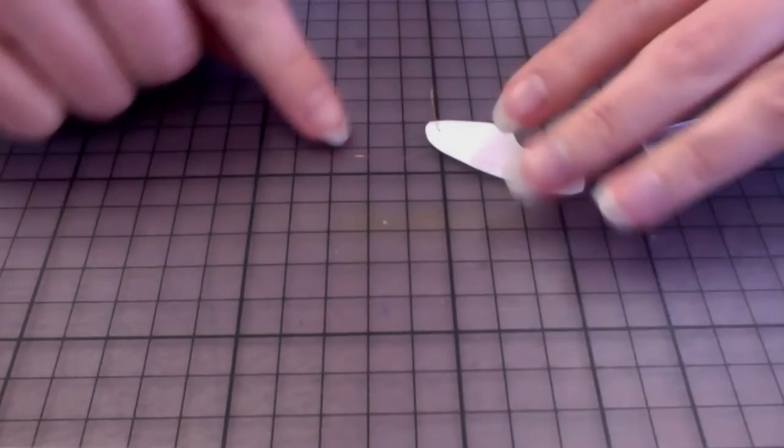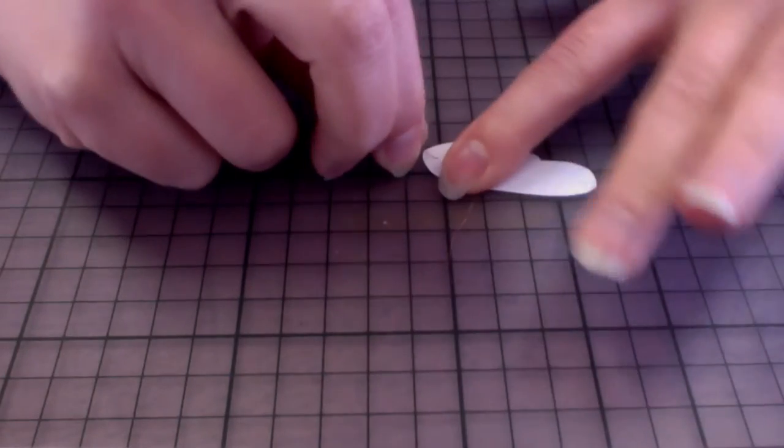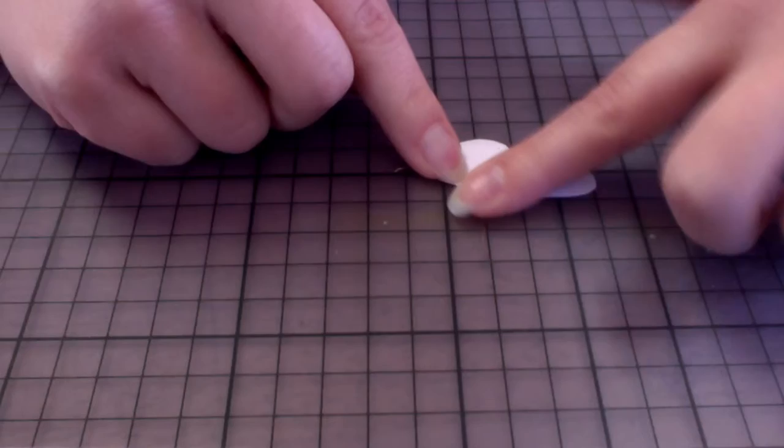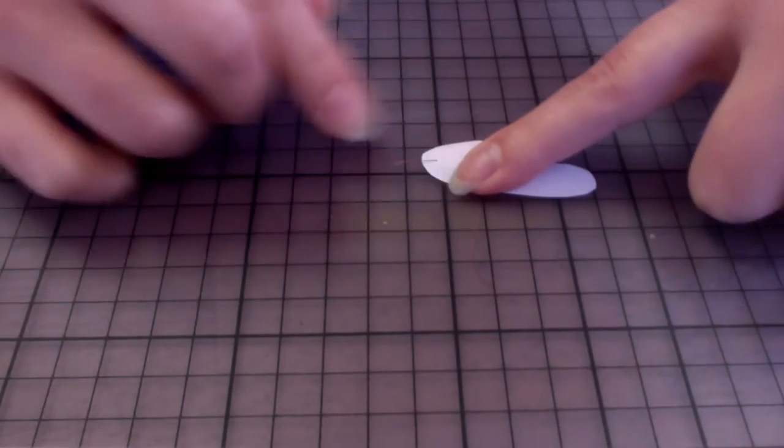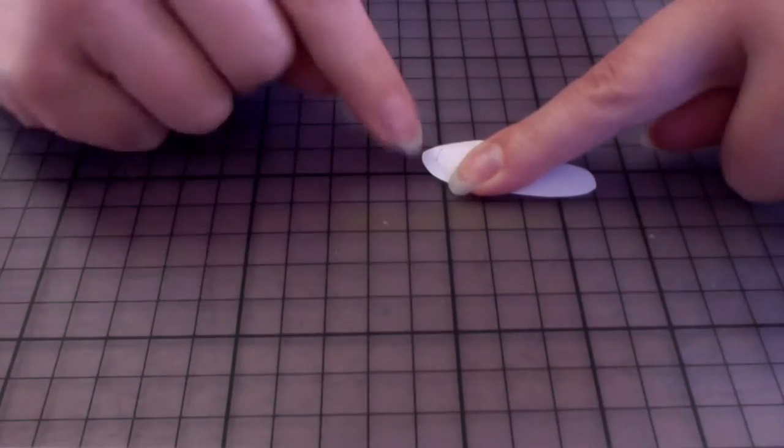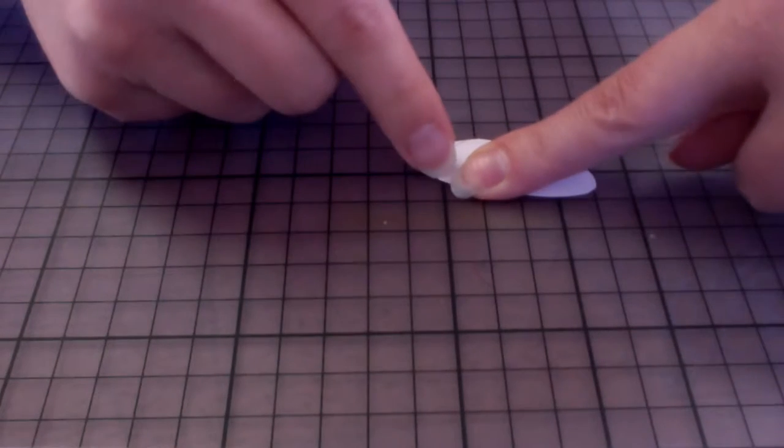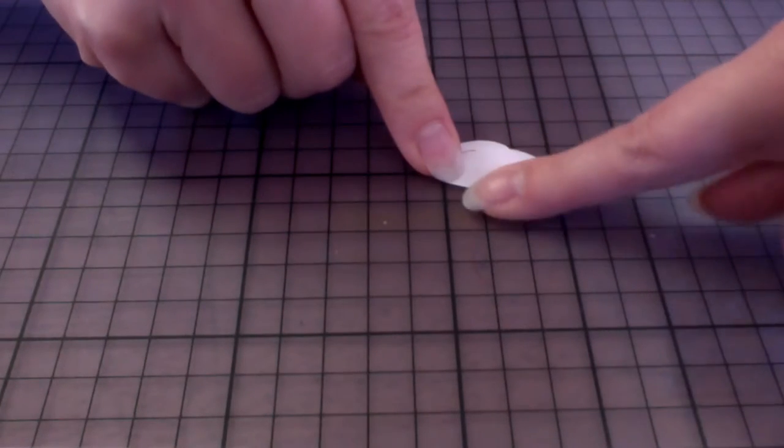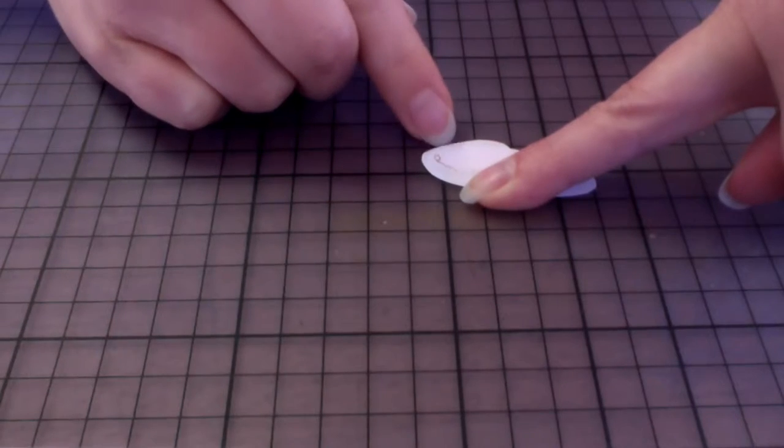And then you want to flip it over and hold down the back of it with your finger or a bit of tape to the cutting board, and then you've got this little bit that's sticking up, and what you do is you flatten it, and then you twist it with your finger until it curls into itself.